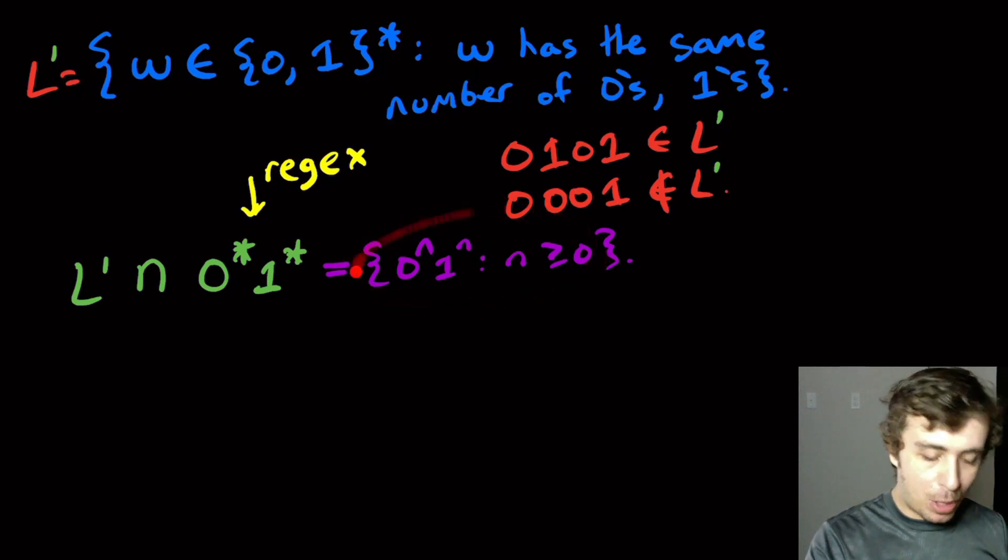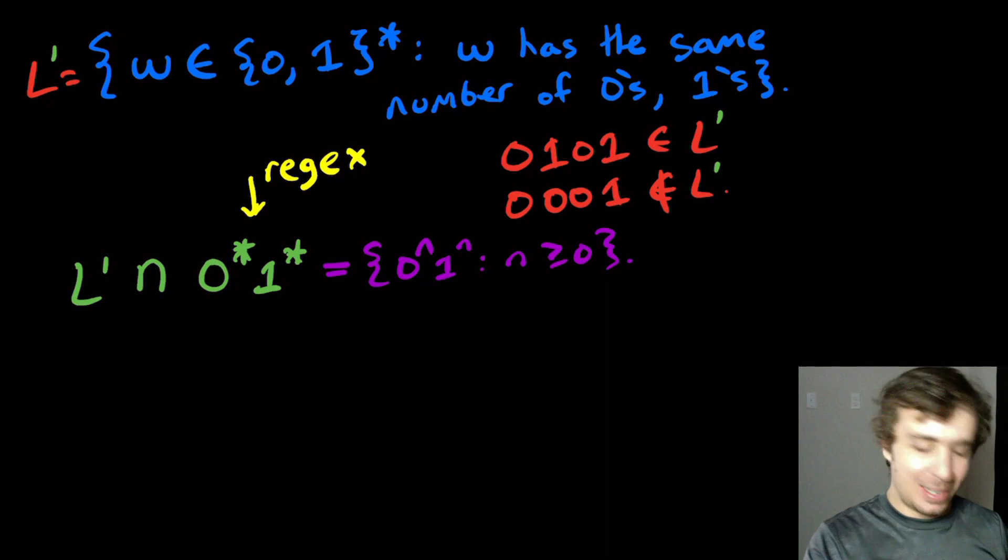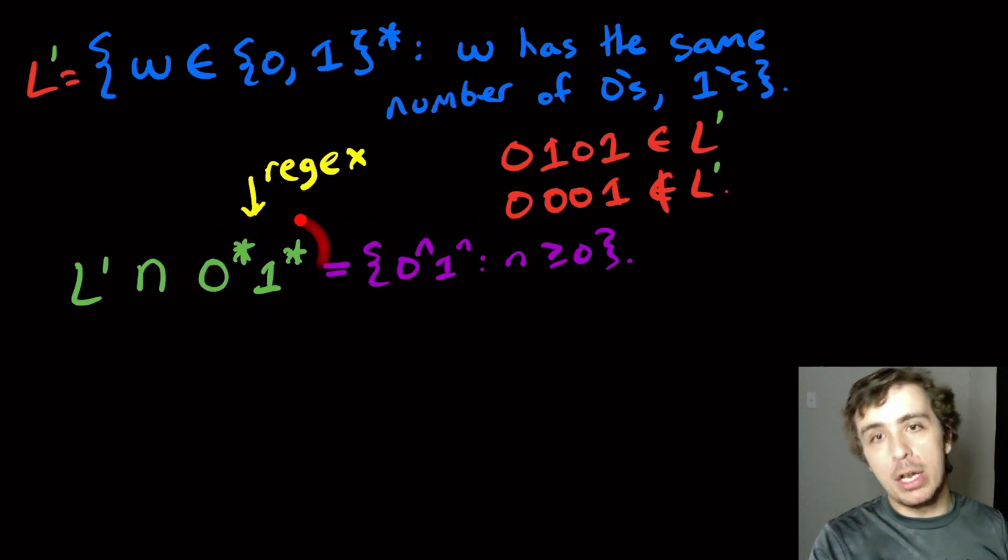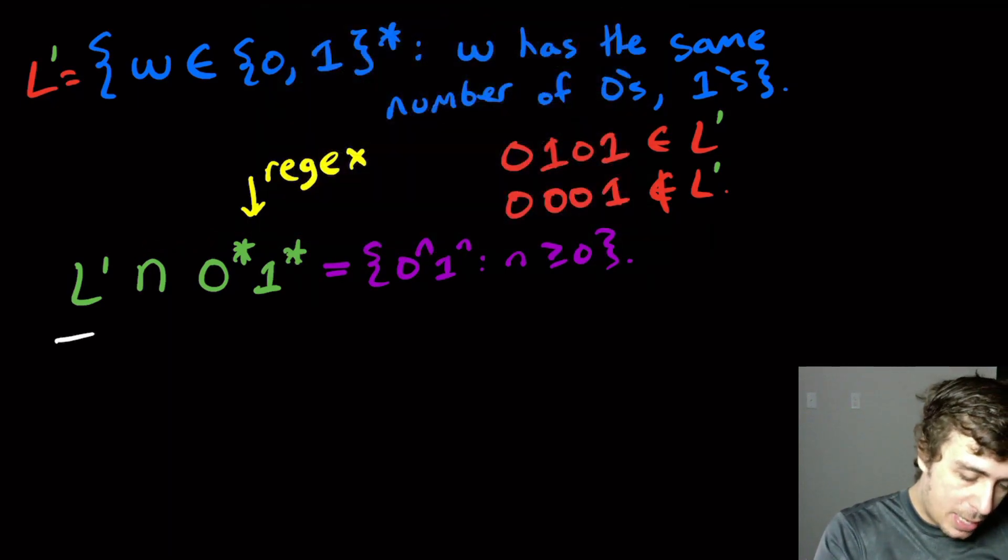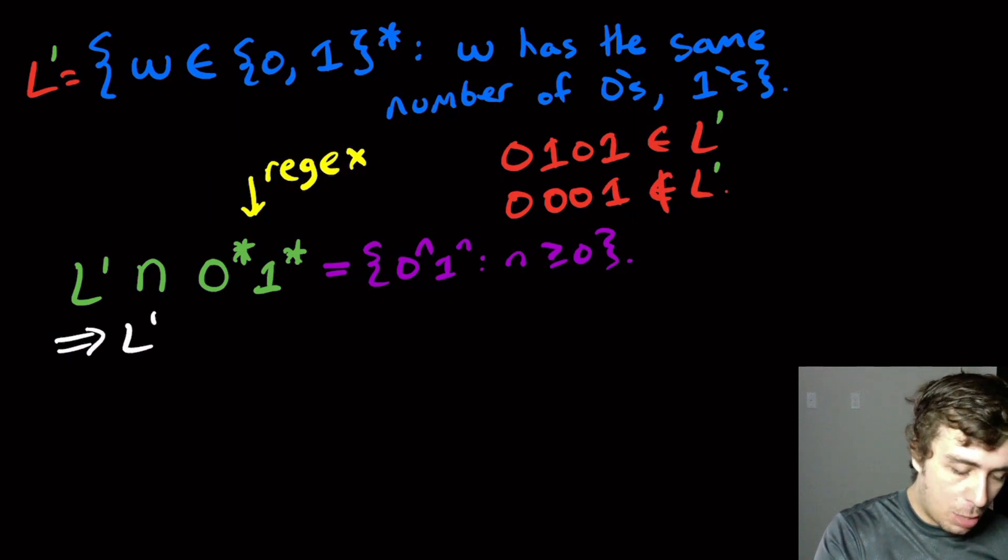And we know already, because we've proven it before, that this purple thing is not regular. And so if L' is regular, then the right-hand side is regular because we know this thing is regular. So the only possible way that this thing could not be regular is if the left thing is not regular, and so that proves that it is not regular. So from that, we have effectively shown that L' is not regular.